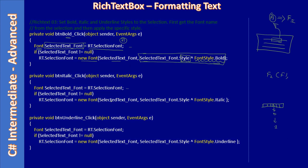The same pattern applies for italic and underline — we use SelectionFont to retrieve the current font, perform an XOR operation with FontStyle.Italic or FontStyle.Underline respectively, construct a new font, and set it back to SelectionFont. In all three cases we retrieve the selection font, construct a new font with the style applied or revoked, and reset it back to the SelectionFont property.